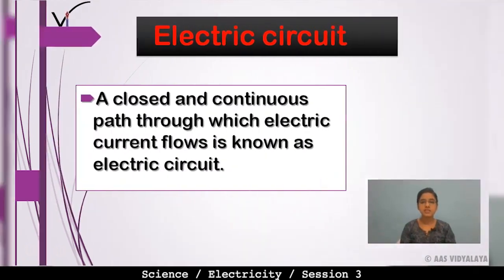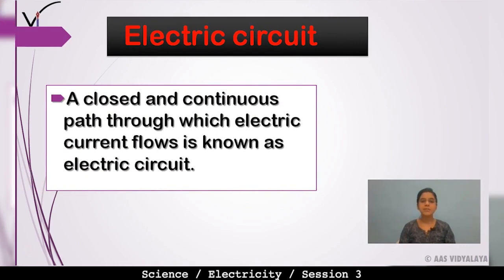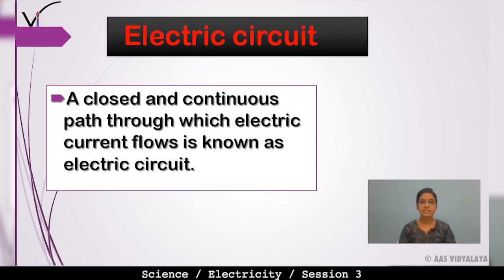Let's start our session with circuit diagrams. First, what is an electric circuit? It is a close and continuous path through which electric current flows — that is known as an electric circuit. Any path through which electric current can flow must be continuous and closed.